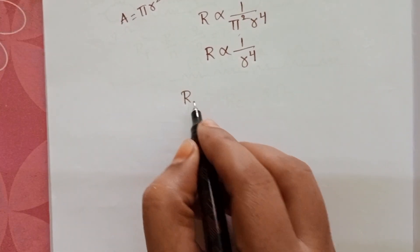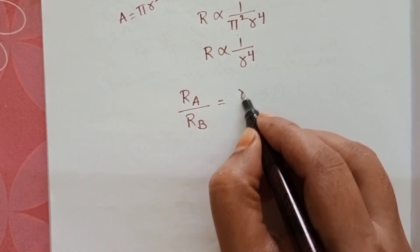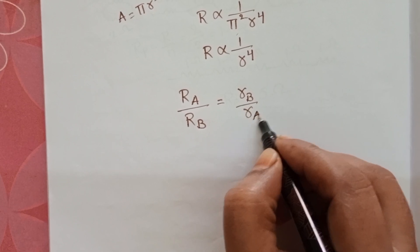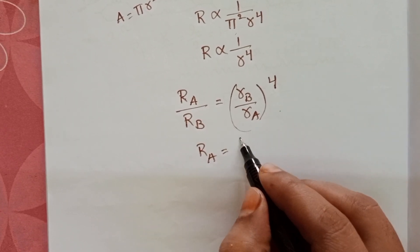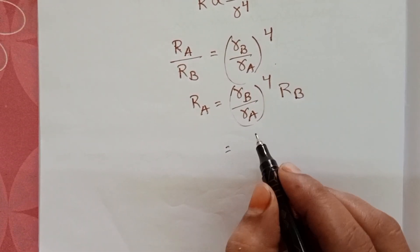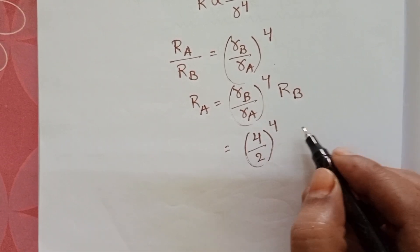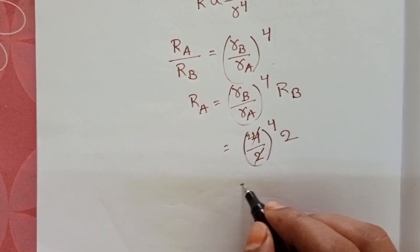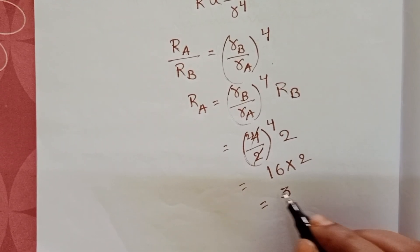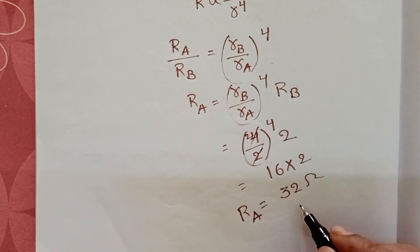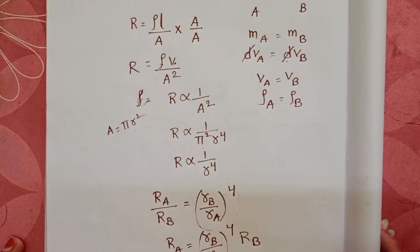Now, resistance of wire A divided by resistance of wire B equals radius of wire B divided by radius of wire A, whole to the power 4. Radius of wire B is 4 mm and radius of wire A is 2 mm. Resistance of wire B is 2 ohm. So resistance of wire A equals (4/2) to the power 4 into 2, which is 2 to the power 4 equals 16, and 16 into 2 equals 32 ohm. Therefore, resistance of wire A is 32 ohm.